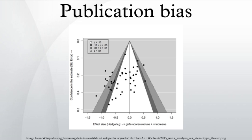Examples of publication bias are given by Ben Goldacre and Peter Wilmshurst. In the social sciences, a study of published papers on the relationship between corporate social and financial performance found that in economics, finance, and accounting journals, the average correlations were only about half the magnitude of the findings published in social issues management, business ethics, or business and society journals.